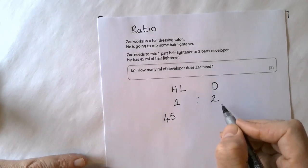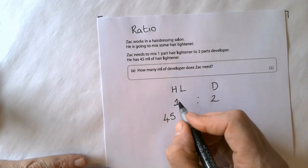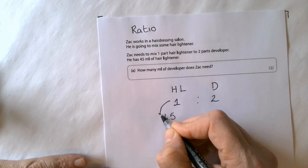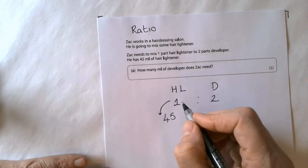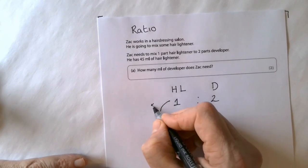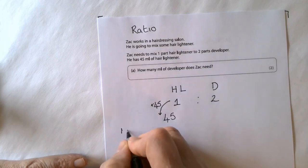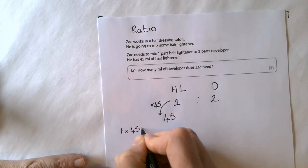One way to look at ratio when it's a simple ratio like 1 to 2 is what would you have to multiply 1 by to get to 45. And the answer would be to multiply it by 45. One multiplied by 45 equals 45.